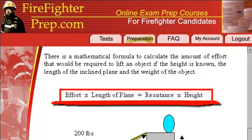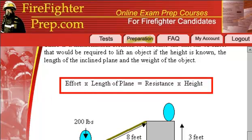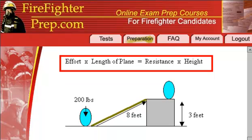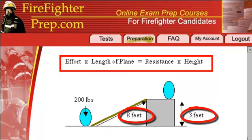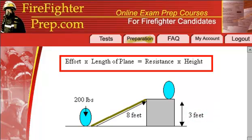Effort times the length of the plane equals resistance times the height. In this example, the resistance would be 200 pounds, the length of the plane would be 8 feet, and the height would be 3 feet. You plug those numbers into the formula, and that will give you how much effort would be required to lift this object up to the top of the ramp.